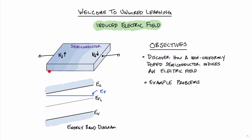Over here on the left, we have a block of semiconductor which has a graded distribution of carriers, with higher concentration on the left to lower concentration on the right. It turns out that this produces an energy band diagram that has a slope, as shown in the picture below. In this picture, we have chosen to plot the Fermi level as a flat line. What that means is that we have a slope for the conduction and valence bands, as well as the intrinsic Fermi level.